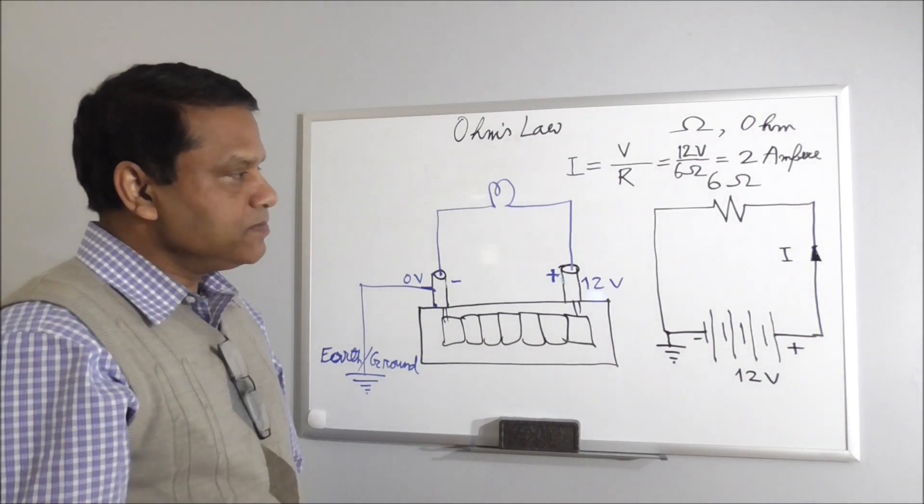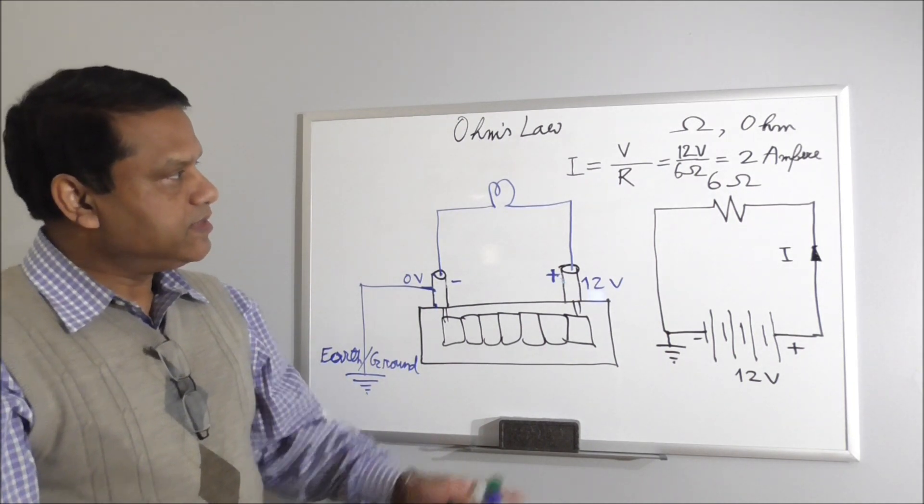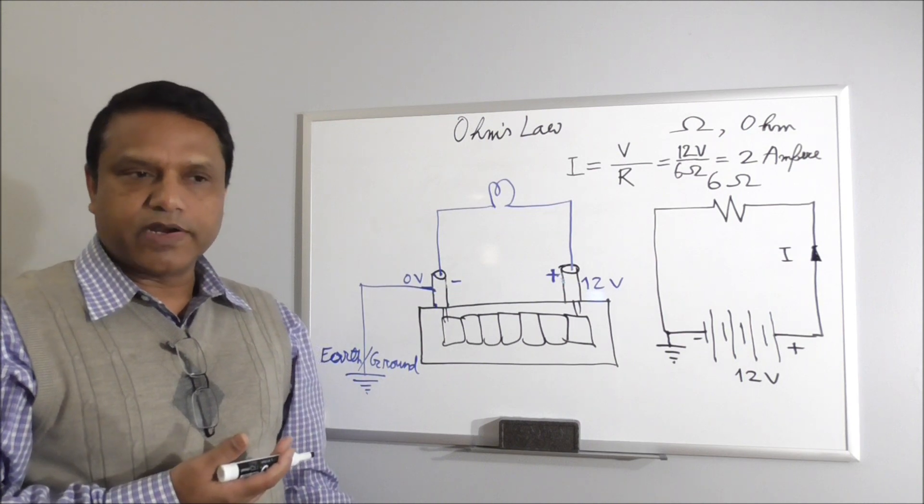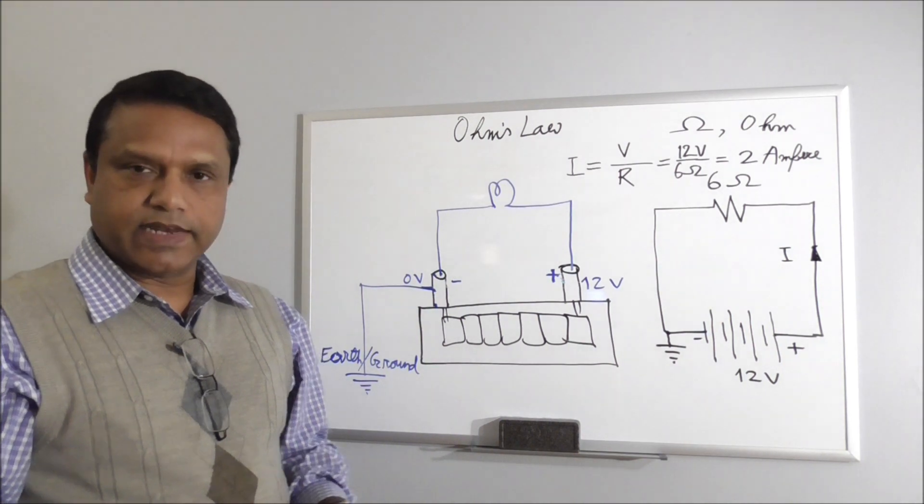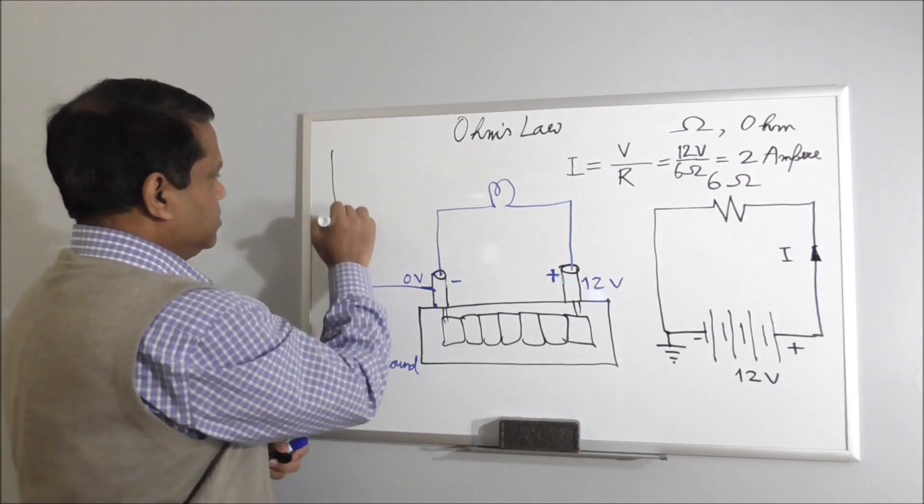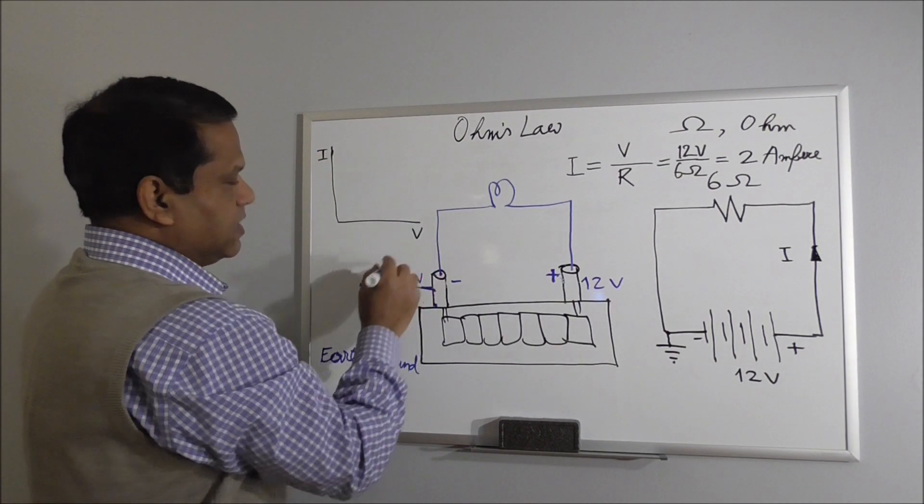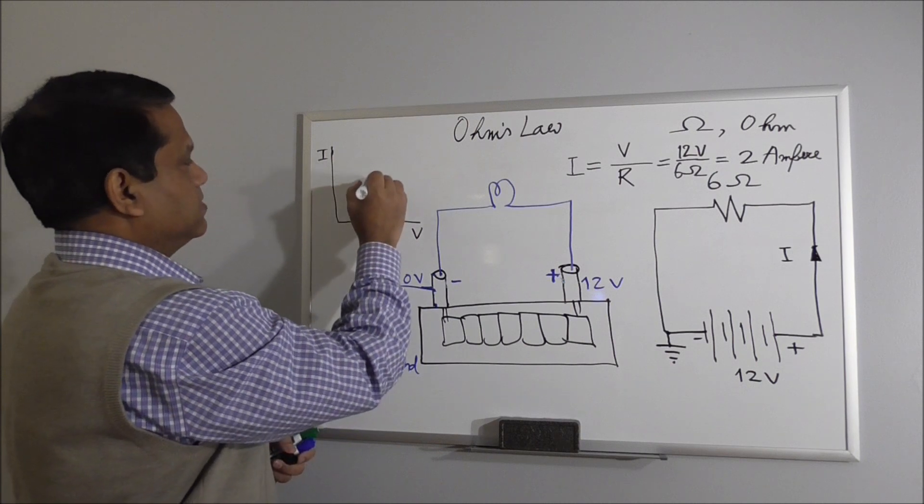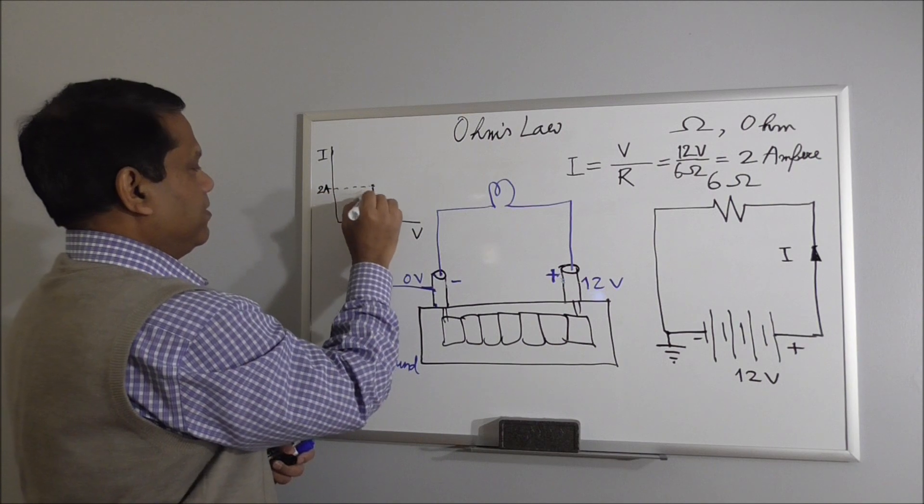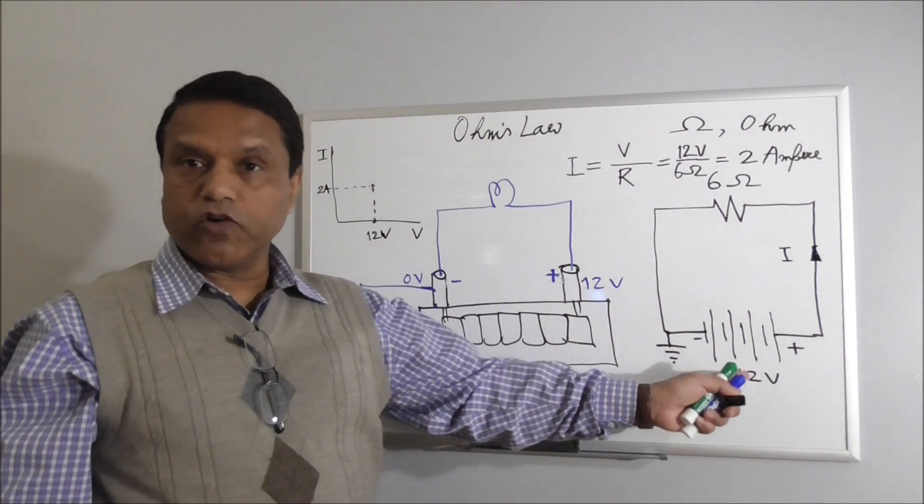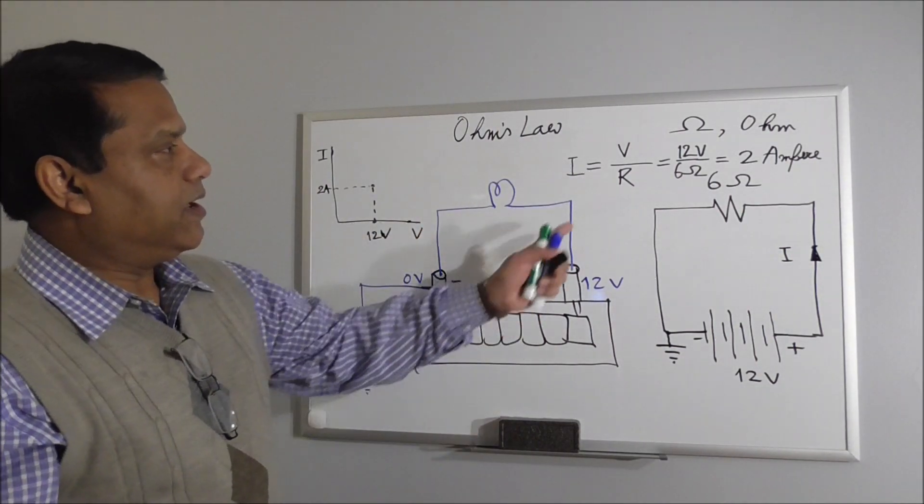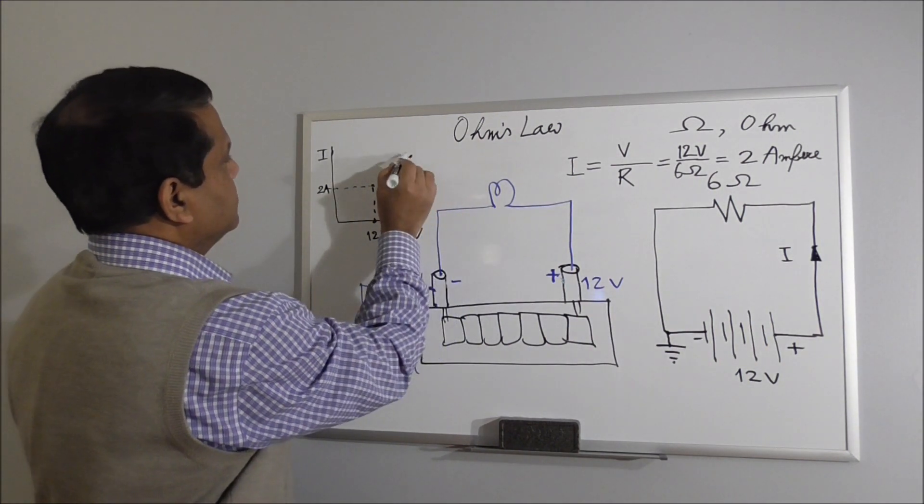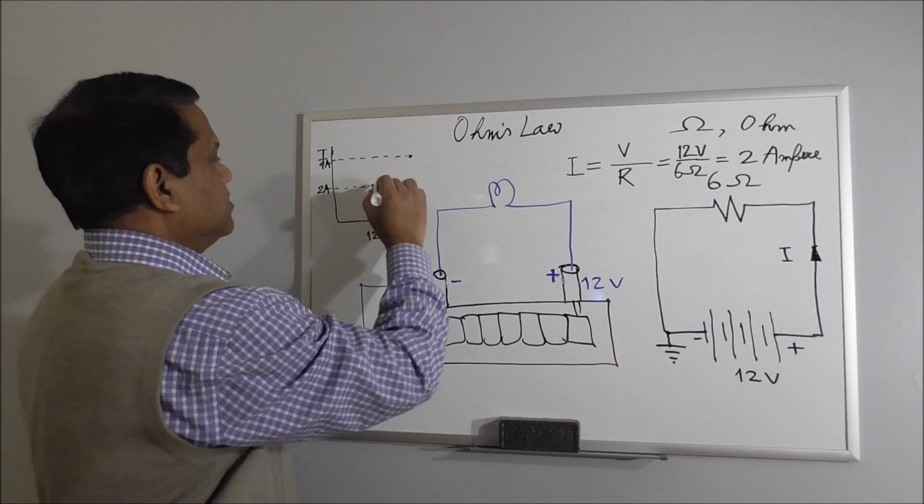One thing we have to understand here, or remember, is that this expresses a linear relationship. So if you plot - I know plotting something is an engineering thing, but we actually do that even in our real lives with Excel and everything. So if you plot the current versus voltage, I versus voltage, in this case we apply 12 volts and we're getting current of 2 amperes. But if you increase the voltage to 24 volts, suppose you come to this point, according to Ohm's Law, the current will be 24 by 6, 4 amperes. So that will be somewhere here, 4 amperes. So if you connect these points, you'll see it will be like this.